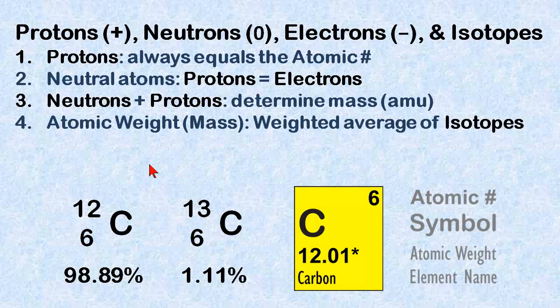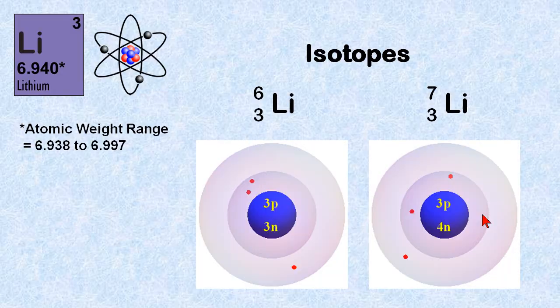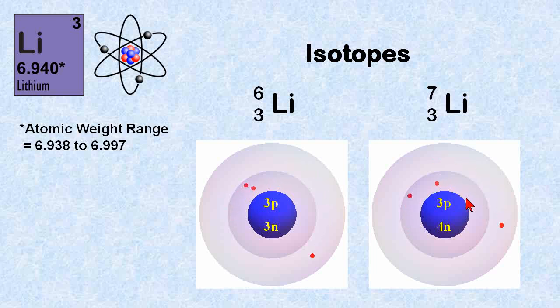In order to remember protons, neutrons, and electrons and isotopes, there's just four things you should really remember. Protons are always equal to the atomic number. In neutral atoms, protons are equal to electrons. And neutrons plus protons determine the mass in AMU. And the atomic weight or mass, we'll use these interchangeably, is the weighted average of isotopes. And we'll talk about weighted averages in a minute. So when you look at carbon-12 right here, most of the elements we find out there, this is kind of a weighted average. Most of the isotopes of carbon are carbon-12. And then there's very few of them that are carbon-13. So 99% carbon-12, 1% carbon-13. And here's our references here. And let's just look back to lithium and see that it still makes sense.